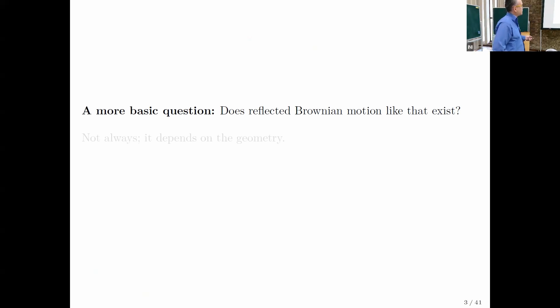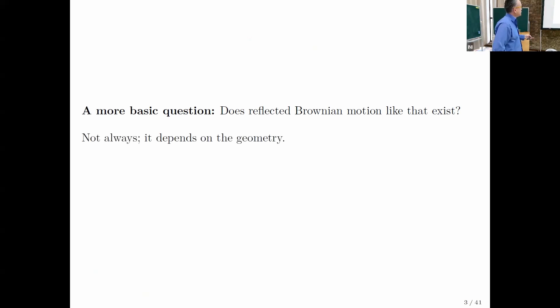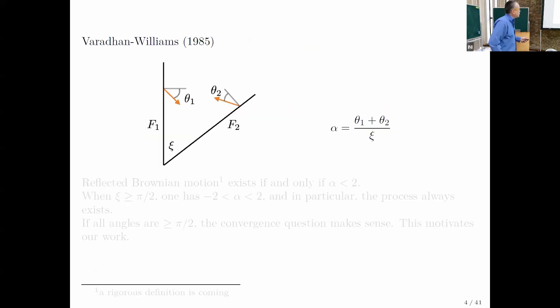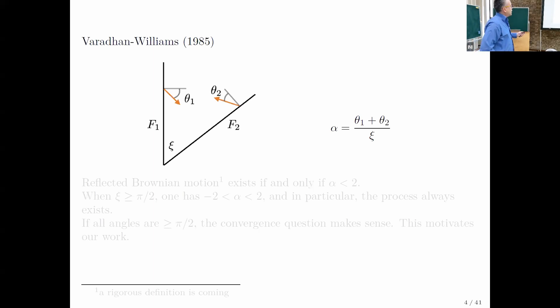whether such a process even exists. Does reflected Brownian motion even exist in this generality? And the answer is: no, not always — it depends on the geometry. So let's focus on the geometry of just the corner. This question goes back to work by Varadhan and Williams.